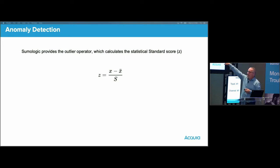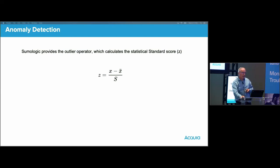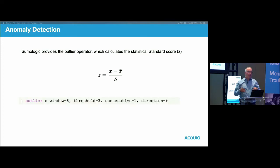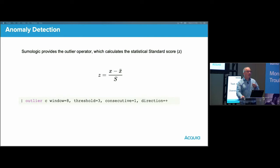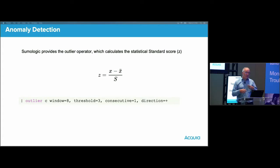In this equation, Z represents the standard score, X is the data point, you've got the mean on the right, and underneath is the standard deviation. The operator has a number of options, including adjusting the threshold, how many consecutive data points above a threshold are considered a violation or anomaly, and the direction — which lets you define whether you're interested in upward trends, downward trends, or both. If you combine query scheduling and alerting capabilities of Sumo with the outlier operator, you have a very powerful monitoring tool. However, unless you've got very homogeneous data, you'll have to do extra work to ensure that the signal-to-noise ratio is high. This will minimize alert fatigue from false positives and ensure that customer-impacting events don't slip through the cracks.